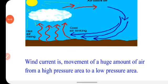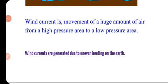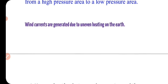A term used here is 'wind current.' Wind current is the movement of a huge amount of air from a high pressure area to a low pressure area. Jab bahut zyada amount mein air high pressure area se low pressure area ki taraf move karti hai, to hum use wind current bolte hain. Wind current can move both horizontally and vertically. Wind currents are generated due to uneven heating on the earth.